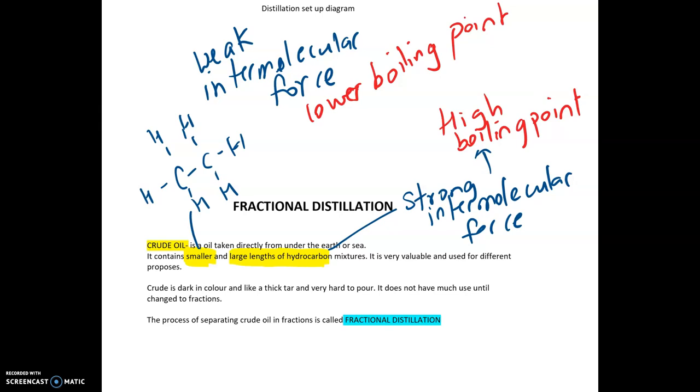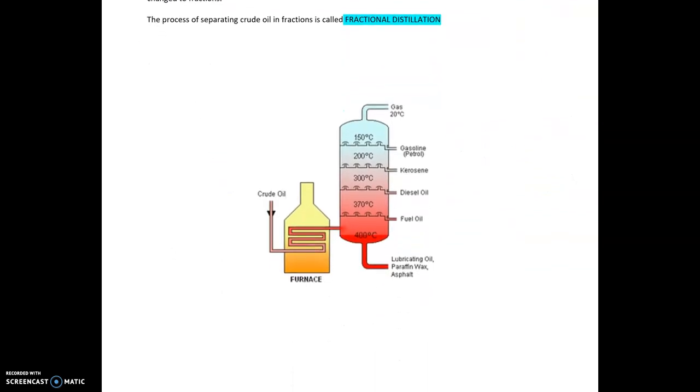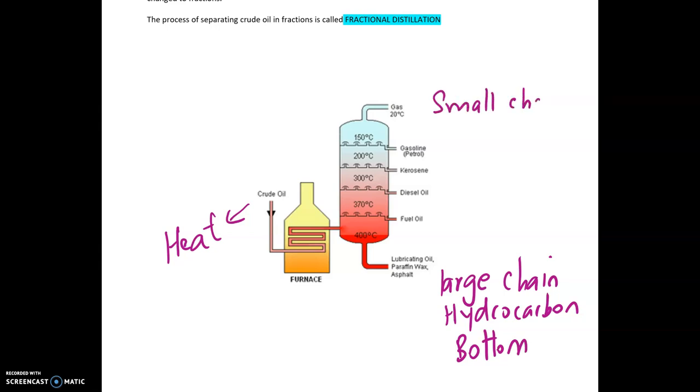Let's look at what the fractional distillation column looks like. This is a typical fractional distillation column where you have your crude oil and you heat the crude oil before you introduce it to your fractional distillation column. Once it goes through the column you'll have your large chain hydrocarbon on the bottom of the column and you'll have your small chain hydrocarbon on the top of the column. As the fractional distillation column is getting heated up, the hydrocarbons are breaking into smaller fractions. The large chain will then vaporize and it rises up the column and as they rise up the column they get condensed and collected into different areas.